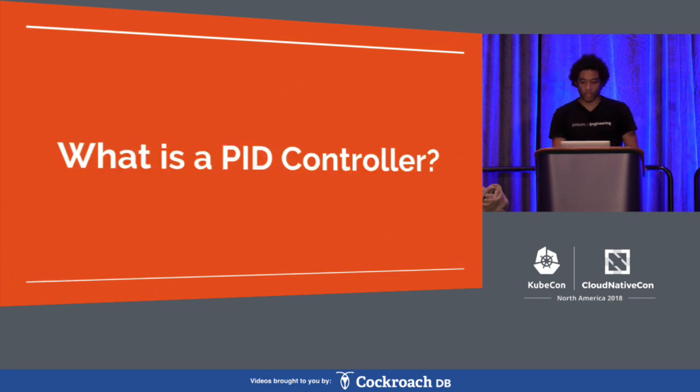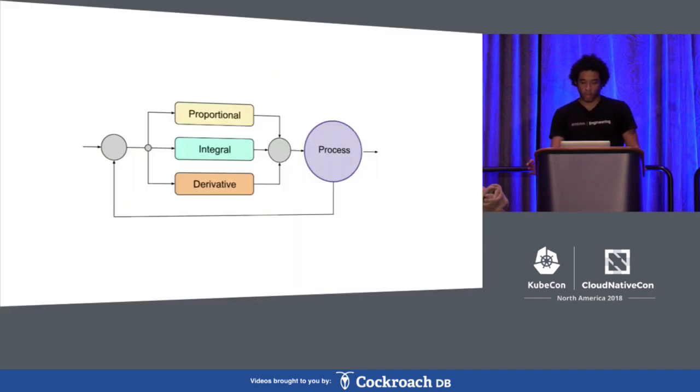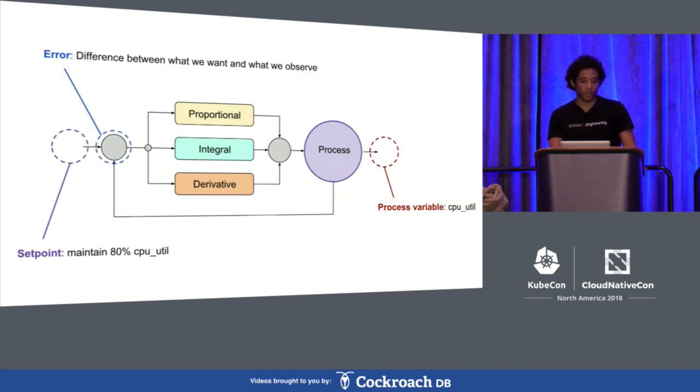So first off, what is a PID controller? Well, from control theory, a controller is any algorithm designed to maintain desired state of an error-prone system. There's a couple key components. The set point would be the desired state you want to maintain. The process variable would be the actual observed state. The error would be the difference between the two.